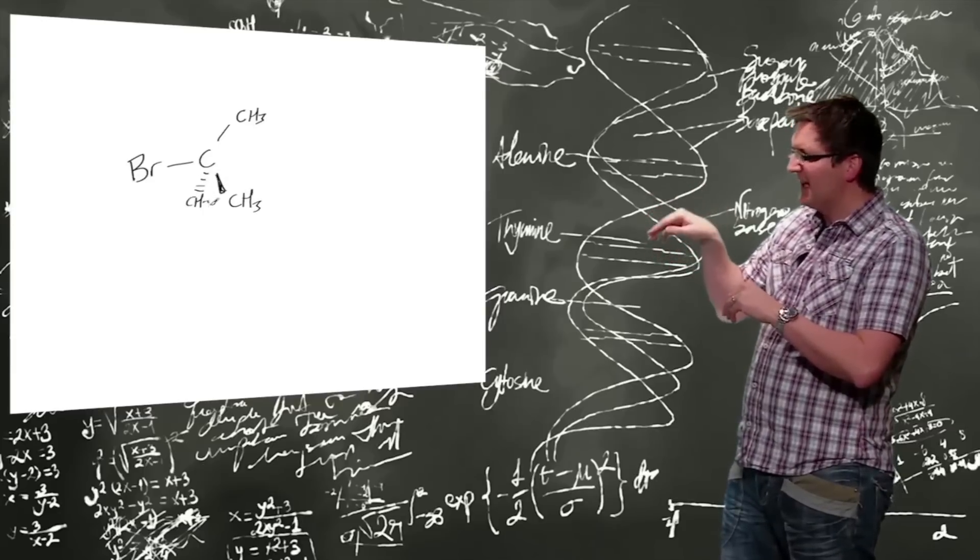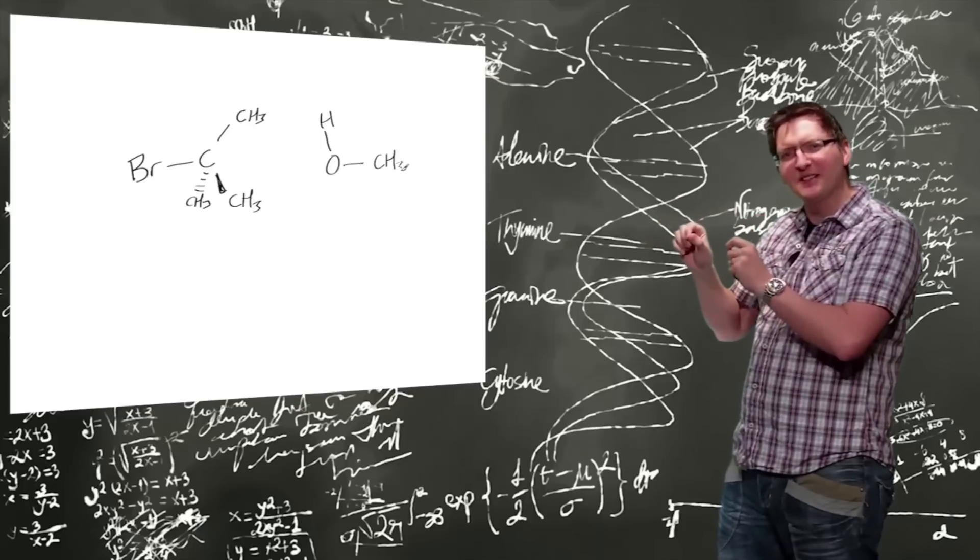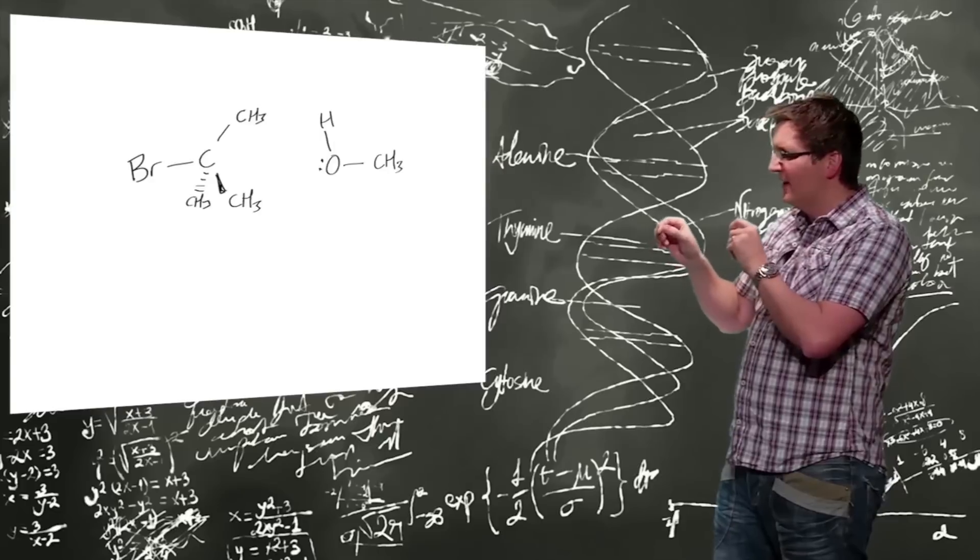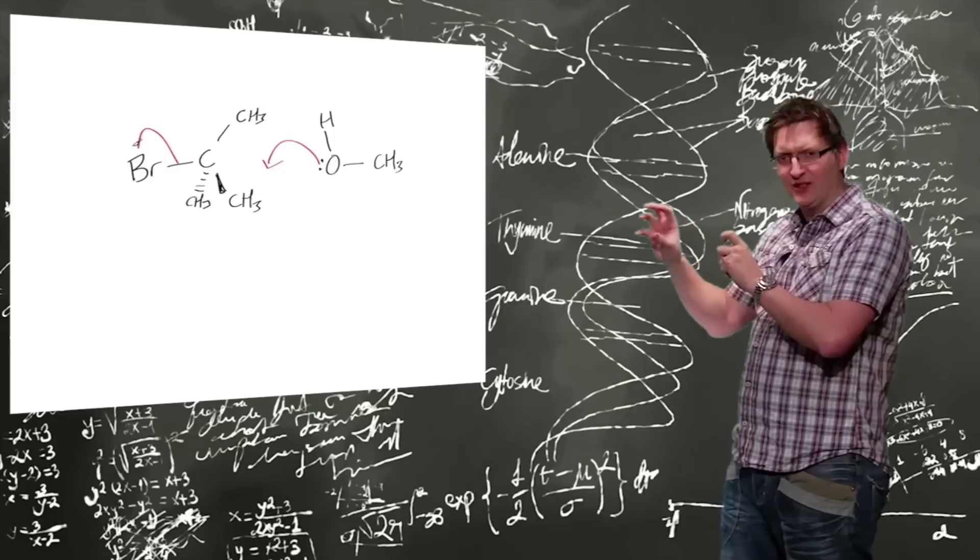As it attacks, you'll see that the curly arrow ends up in the middle of the two species that's attacking, and that's to indicate that there's actually a bond being formed between the oxygen and the carbon.